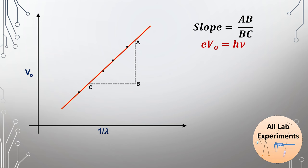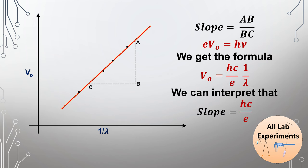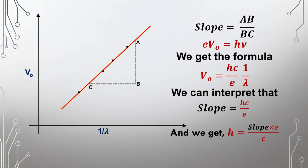we get the formula V₀ = (hc/e)(1/λ). Comparing this with the equation of a straight line y = mx, we understand that the slope equals hc/e. From this, we get Planck's constant: h = (slope × e)/c. Using this formula, we insert the value of slope to find Planck's constant.